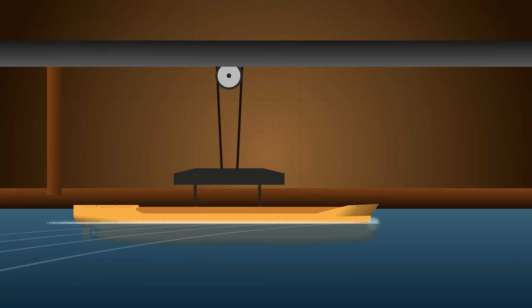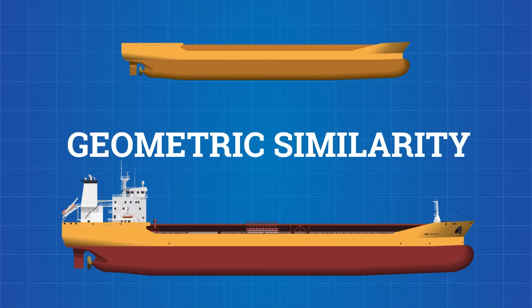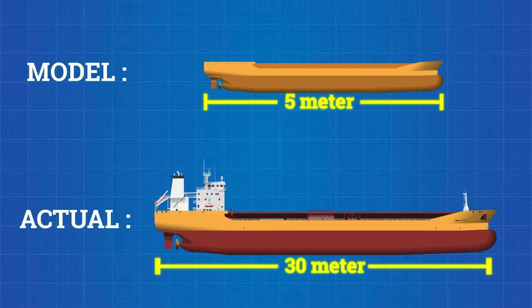If you want a model to behave like the ship, it needs to follow three rules. First, geometric similarity. The model must look exactly like the ship.